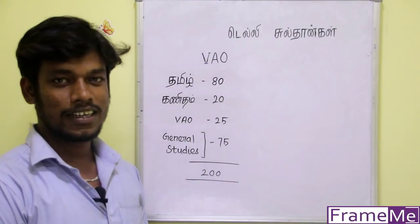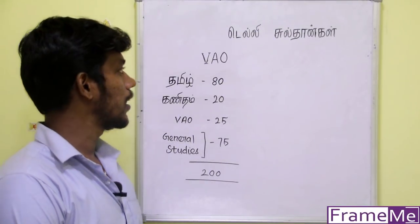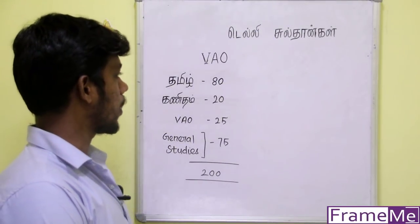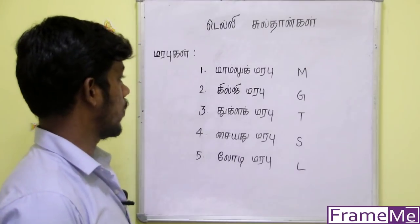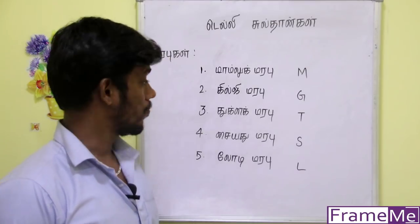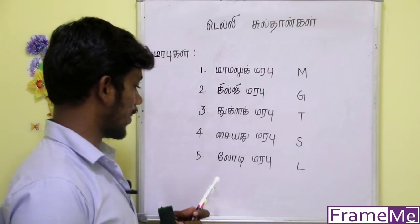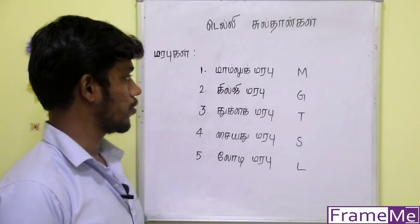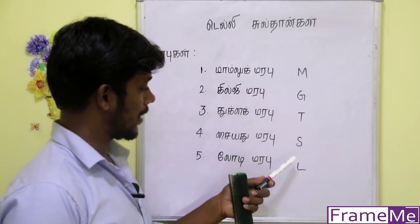Let's get started with the framing shortcut. Let's talk about Delhi Sultanate. There are 5 different types: Mamluk, Gilji, Tuklak, Saitha, Lodi. Or MgTSL.